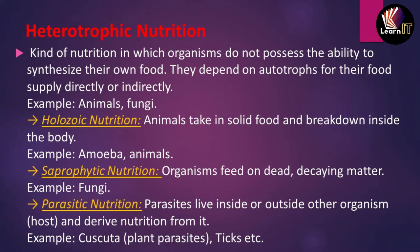The third type is parasitic nutrition. The definition states that parasites live inside or outside other organisms, and that organism is called the host. The organism living on or in the host is known as the parasite, and it derives nutrition from the host. In this mode, one party is benefited and the other suffers a loss. Examples include Cuscuta and ticks.